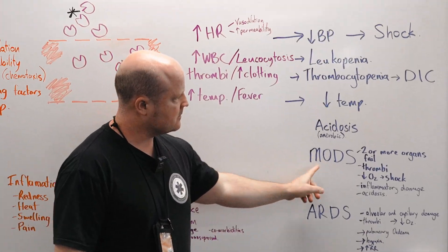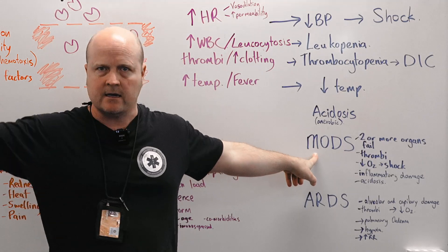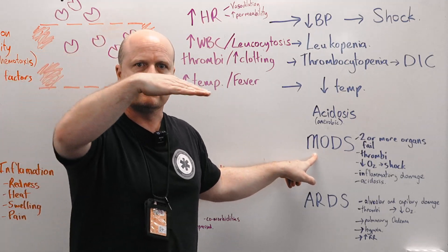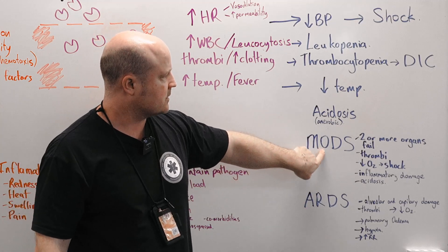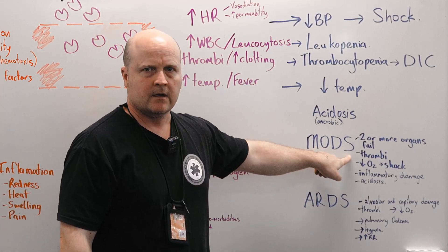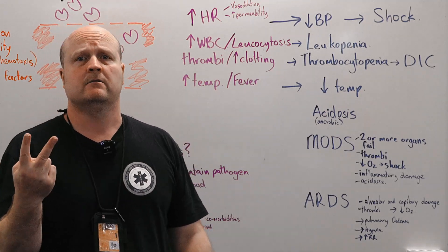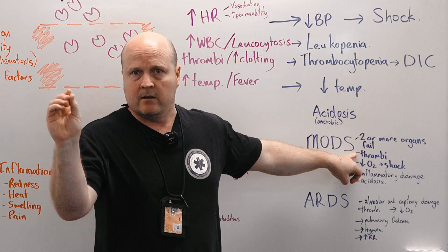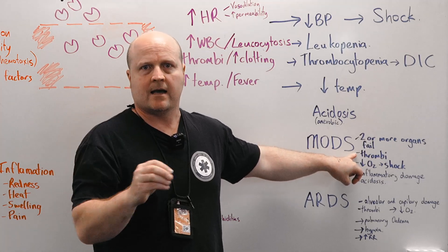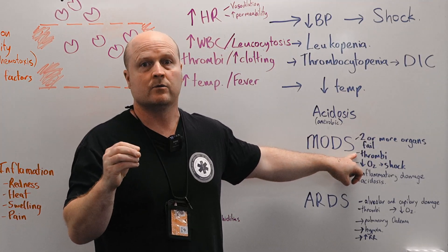Which leads us to MODS. So again, as sepsis progresses into septic shock, we're going to get multi-organ dysfunction syndrome. So this is where two or more of our organs fail. So remember we've got these thrombi, little blood clots. They're going to be clotting up all the blood flow to organs. So our kidneys, our liver, our pancreas, our brain. And that's not a good thing.